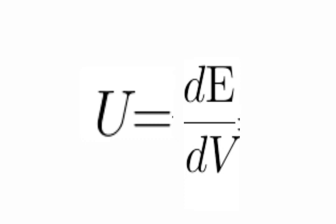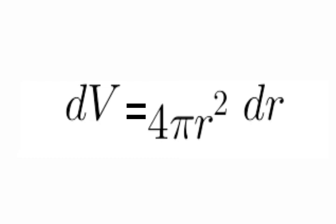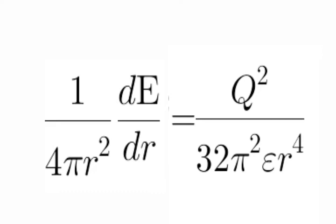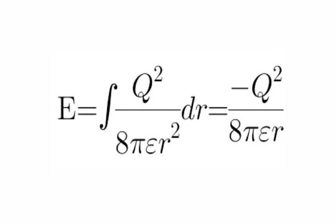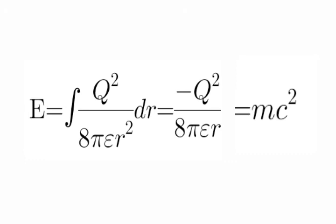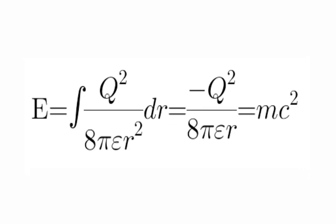We take a volume element from the horizon of the sphere. We can write the equation for the small volume element as this, and we can set our differential accordingly. Integrating both sides gives us the energy due to the electric field. We set this energy equal to mc², where the small m is the mass due to the energy of the electric field. Solving for mass gives us this expression.